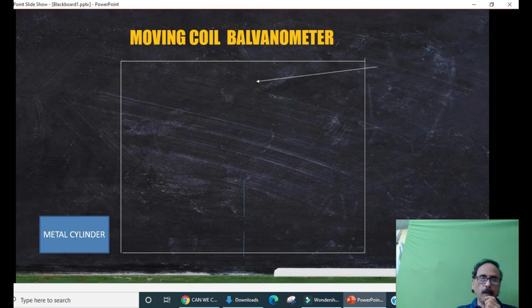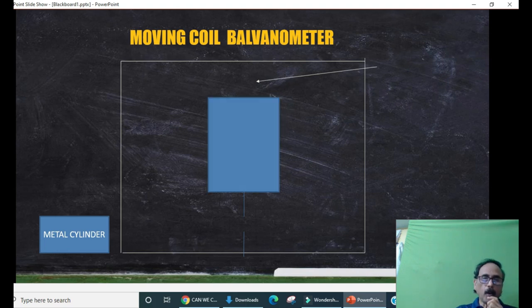Moving coil galvanometer, the construction. It consists of a rectangular coil with n number of turns of copper.